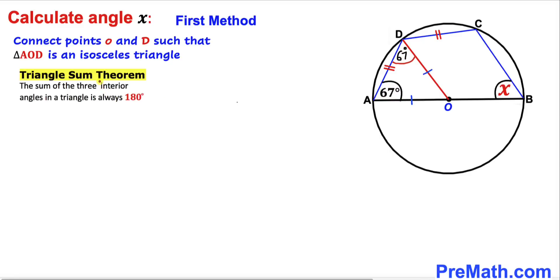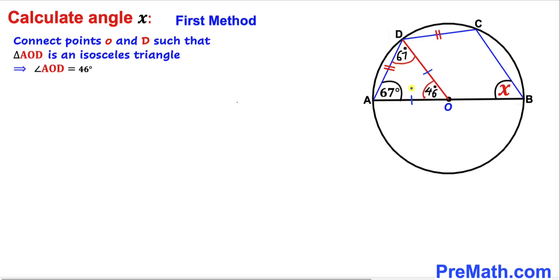Now let's recall the triangle sum theorem: the sum of interior angles in a triangle must be 180 degrees. We know both base angles are 67 degrees, so the remaining angle AOD is 180 − 67 − 67 = 46 degrees. Therefore angle AOD turns out to be 46 degrees.